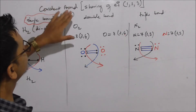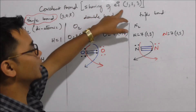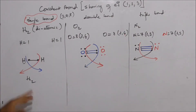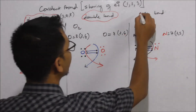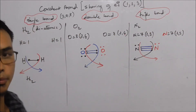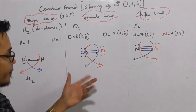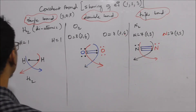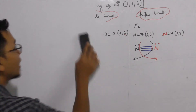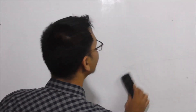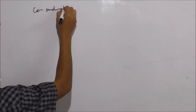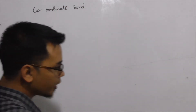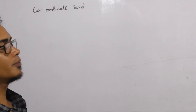So, covalent bonds are formed by sharing of one, two, or three electrons between atoms, forming single, double, and triple bonds respectively. Now, there is also a coordinate bond. If you look at the process, once you form the first bond, you will see that it is a coordinate bond — involving the transfer and sharing of electrons.